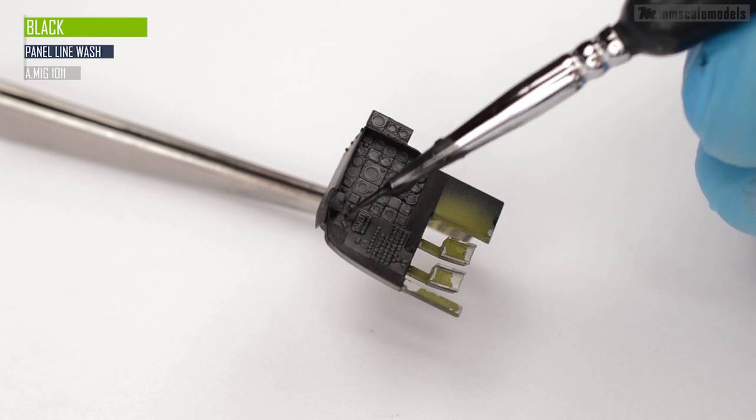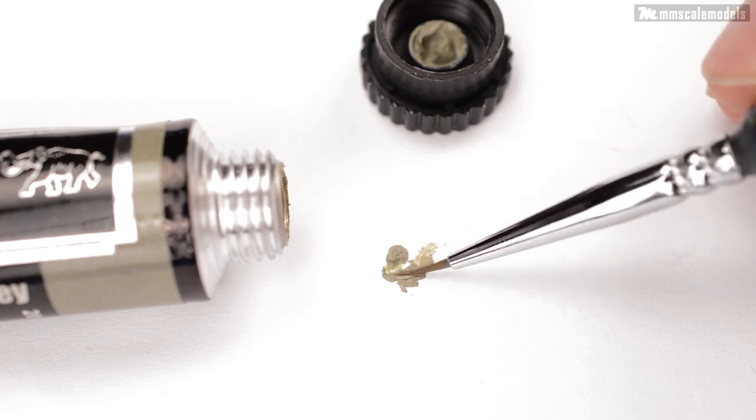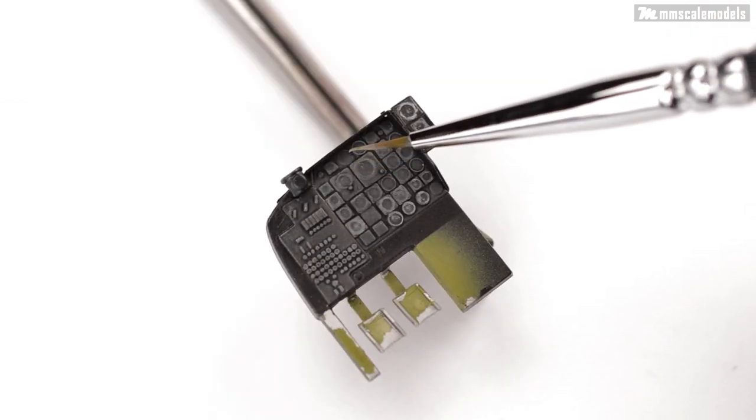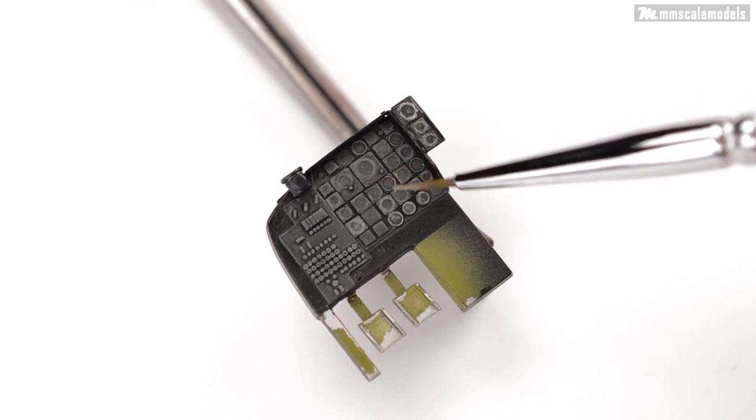After a bit of clean up it is time for a second layer of dry brushing. This time I am going to use a fine brush and I am going to focus on the bezels of the instruments as much as I can.